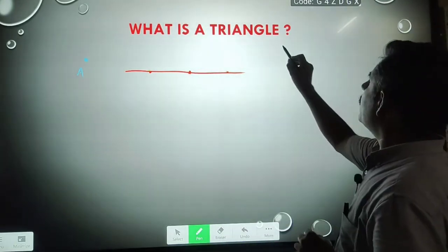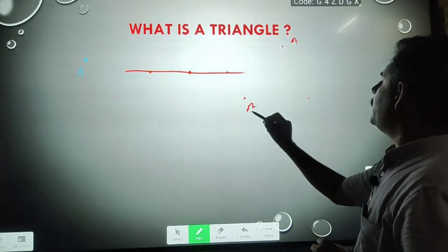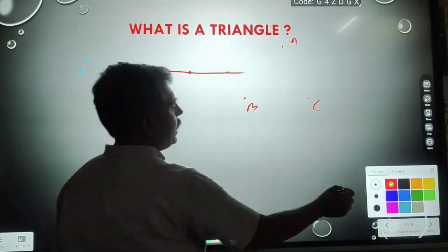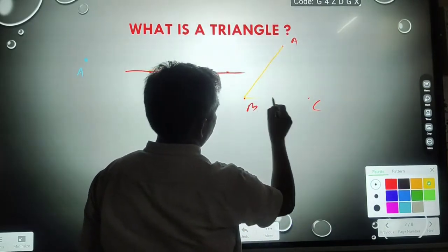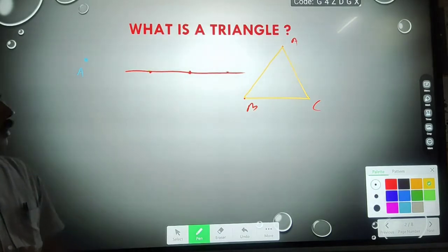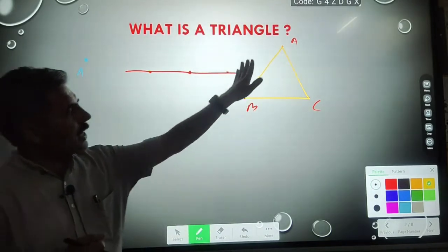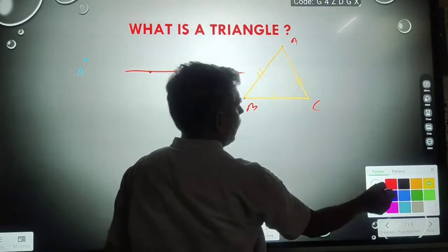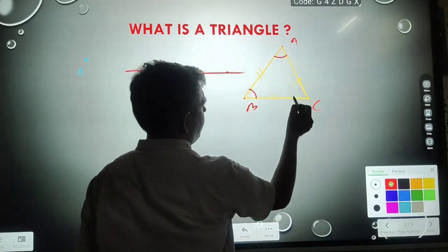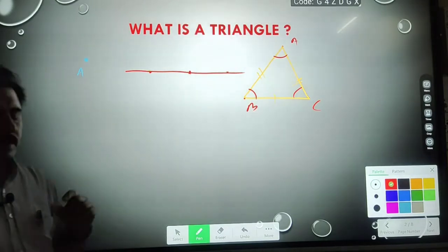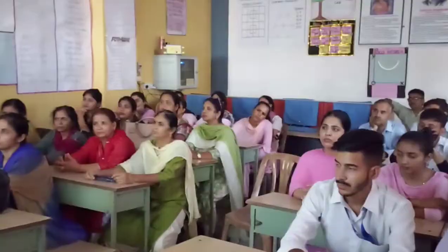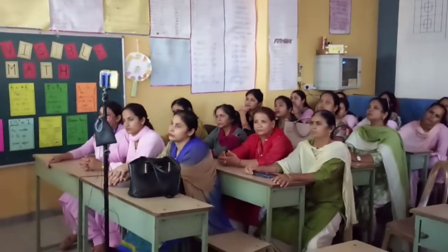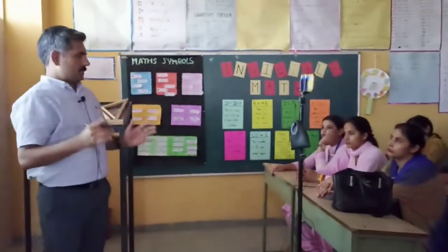Now take another three points A, B, C — these three points are non-collinear; they do not lie on a straight line. When I join these three points A, B, C, we get a closed diagram. This diagram has three sides and three angles at the corners A, B, and C. So this diagram is known as a triangle. The proper definition: a triangle is a polygon with three sides having three vertices.